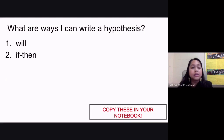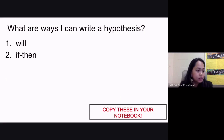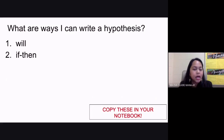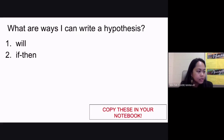The first way is the 'will' format — for example, 'If I use Gain, then it will remove more stains.' The second is the 'if-then' format — for example, 'If I use Palm Olive, then it is going to remove more stains.' Or using the will format: 'Palm Olive will remove more stains.' These are the two formats for writing your hypothesis.